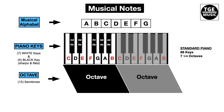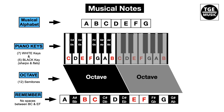Seven white keys and five black keys add up to twelve total notes — whole notes plus sharps and flats — in the musical alphabet. On the keyboard, those twelve notes simply repeat, and those are called octaves. A piano has 88 keys, representing seven and a quarter octaves. Once you learn those twelve notes, they just repeat up or down an octave. Remember: no spaces between B and C, and E and F.